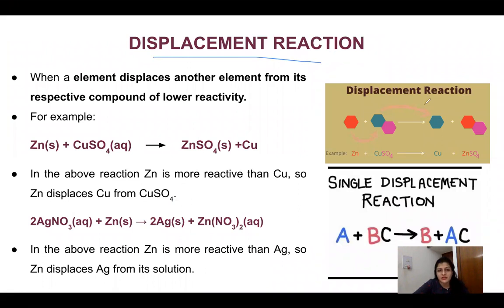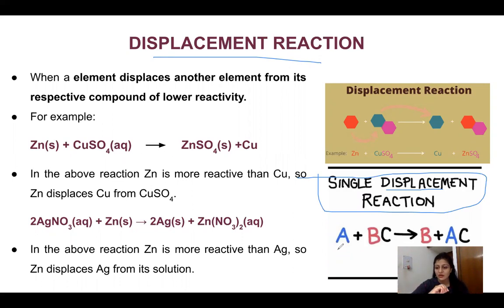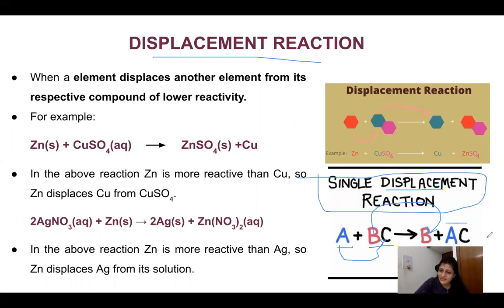So what does displacement reaction mean? It is also called single displacement reaction. In simple words, like if two people are sitting together and one is sitting alone — the single person can put one aside and go sit with someone else, to replace them. That is called a displacement reaction or single displacement reaction. So here, A and B-C are together, A alone displaces B and goes to sit with C. So B is now alone and C has combined with A. That means A has displaced B — this is called a single displacement reaction.